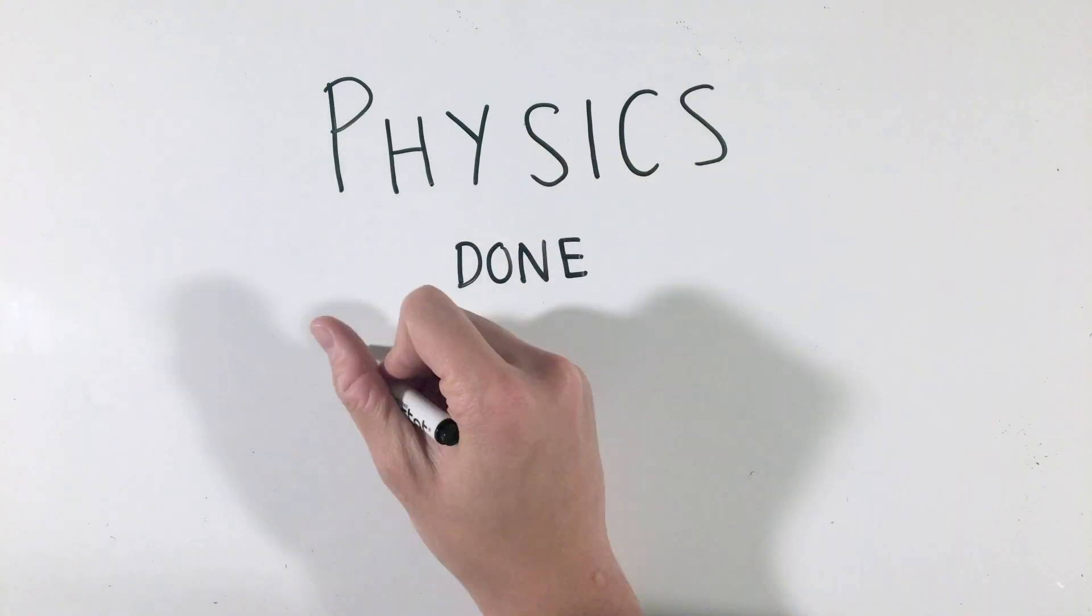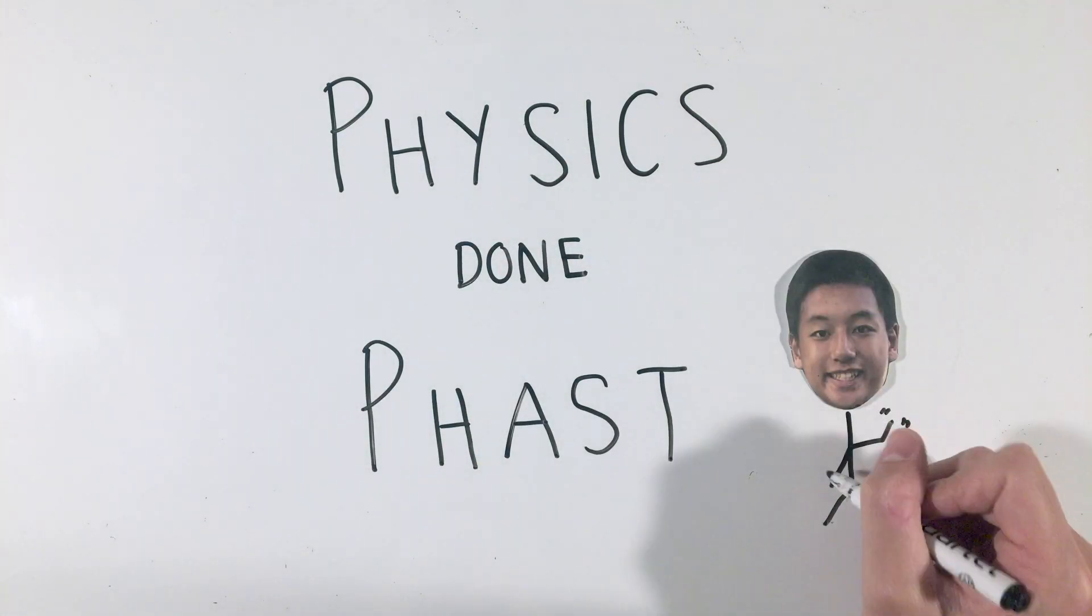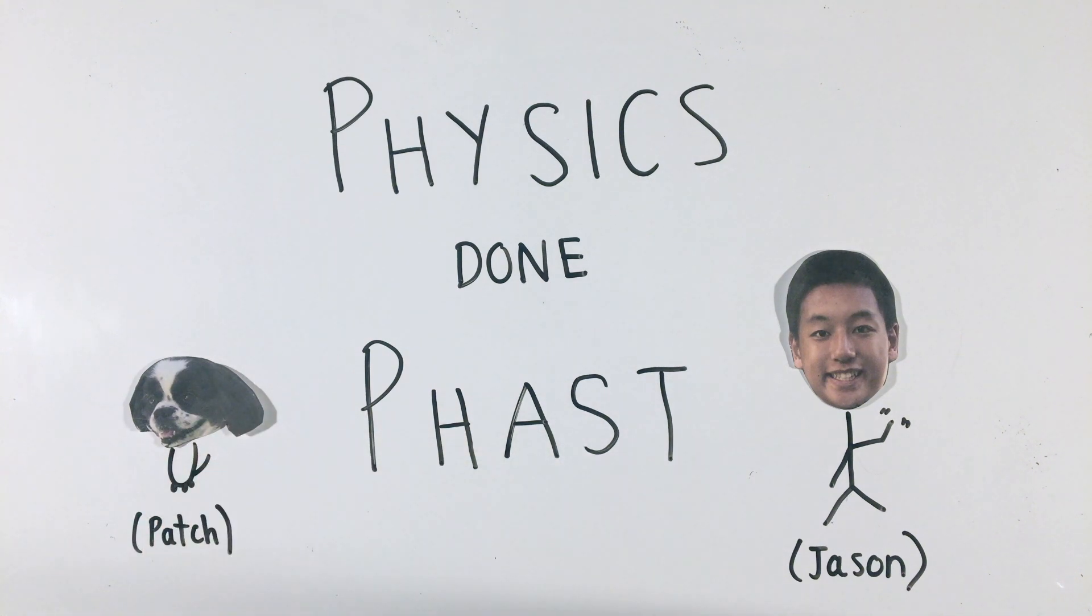We've all heard that like charges repel and opposites attract, but how do charges really work? Charge, like mass, is what's known as an intrinsic property of an object. It's a fundamental property to the object that we can measure.